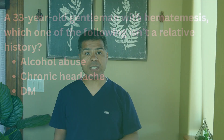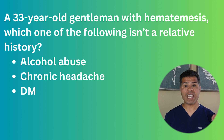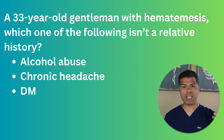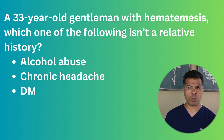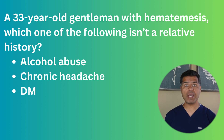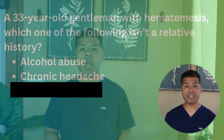Another example: a 33-year-old gentleman presented with hematemesis — which of the following is not relative history? Alcohol abuse, chronic headache, diabetes. Here we have a young patient with upper GI bleed, so alcohol abuse indicates the possibility of cirrhosis, portal hypertension, and varices. Chronic headaches may indicate the likelihood of long-term NSAID use. Diabetes may not be relative in this case.